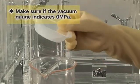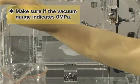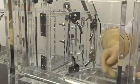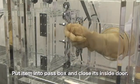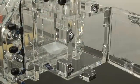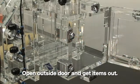When taking out items, after making sure that the vacuum gauge indicates zero megapascals, put the items into the pass box and close its inside door. Next, open the pass box's outside door and get the items out.